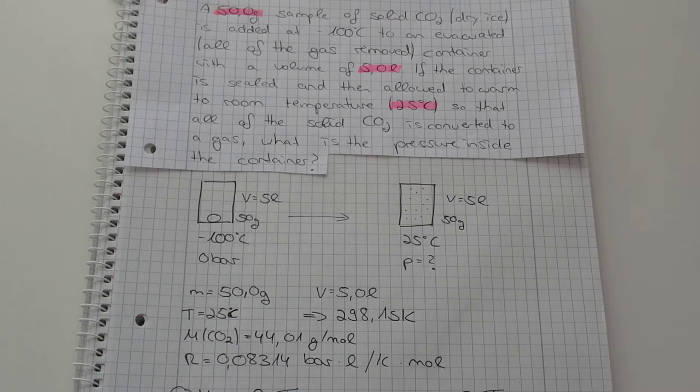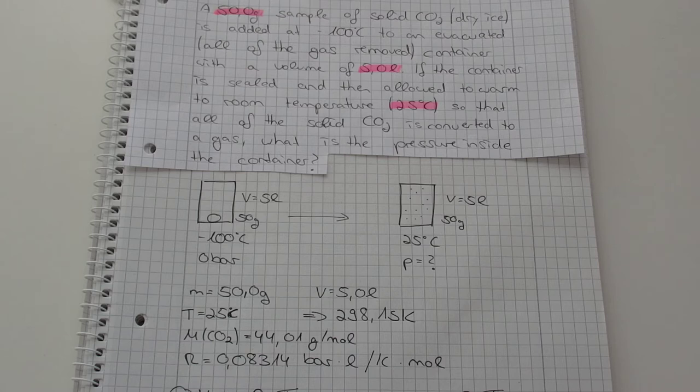A 50 gram sample of solid CO2 is added at minus 100 degrees Celsius to an evacuated container with a volume of 5 liters. If the container is sealed and then allowed to warm to room temperature so that all of the solid CO2 is converted to a gas, what is the pressure inside the container?